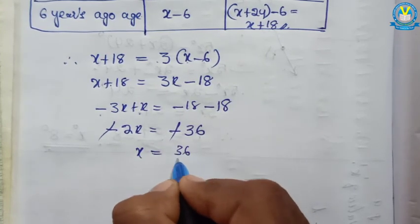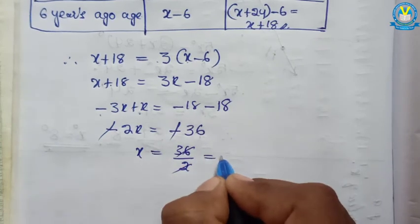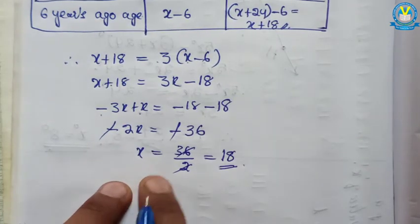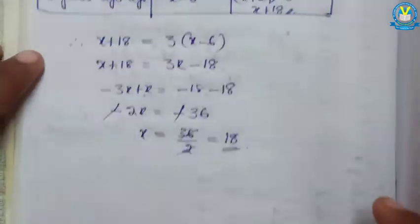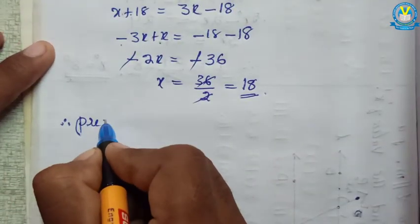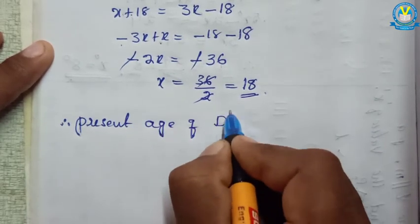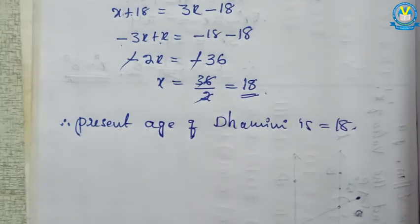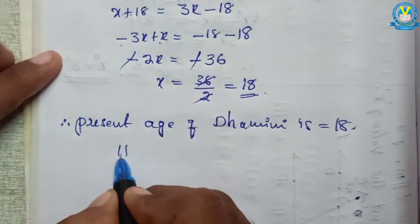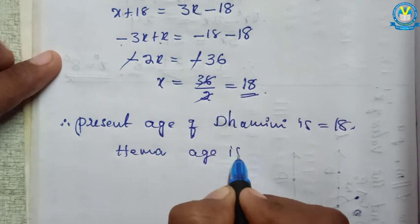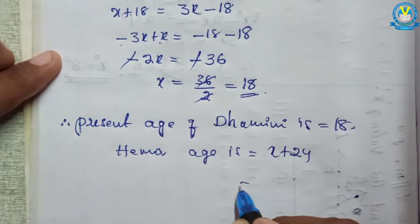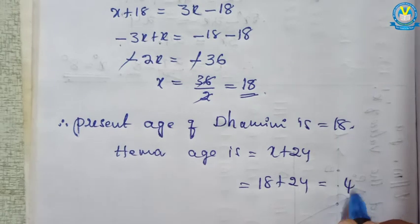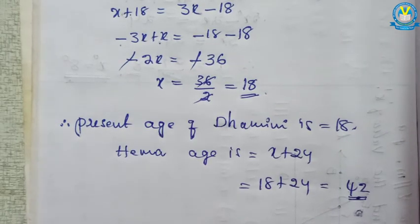Minus minus cancel: 2x equal to 36. x equal to 36 by 2, that equals 18. So x is 18, which is the present age of Domini. So present age of Domini is 18. But Hama's age is x plus 24, that equals 18 plus 24, which equals 42. So 42 is the answer — Hama's present age is 42.